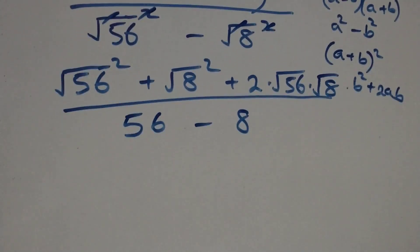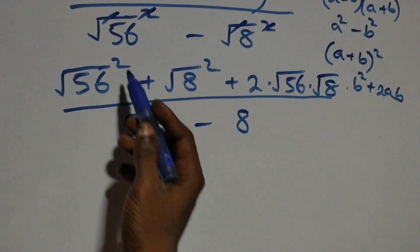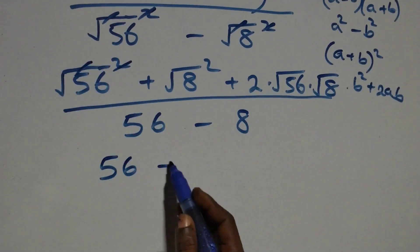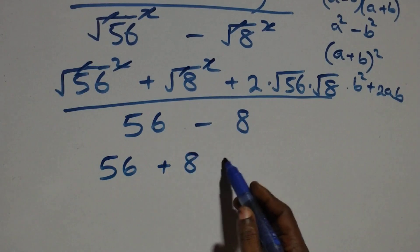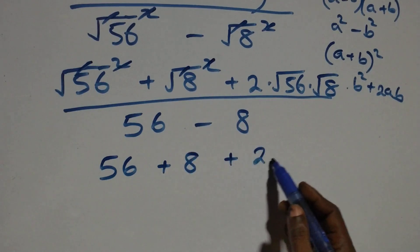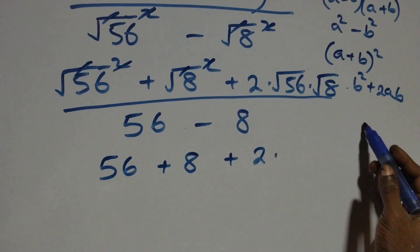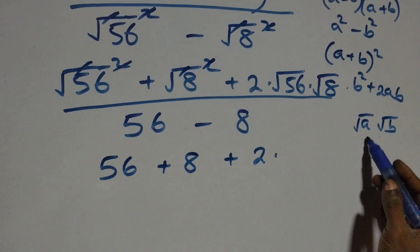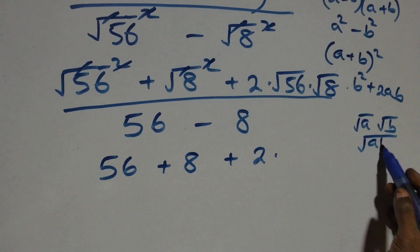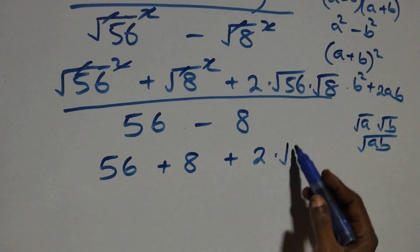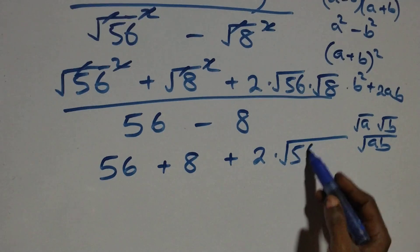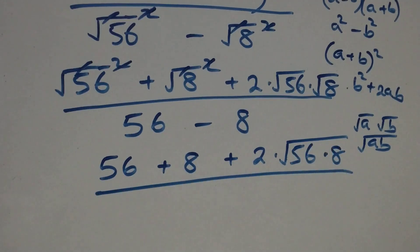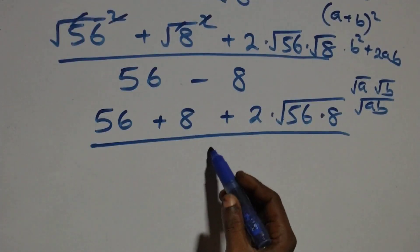For the numerator, the expansion of a plus b all squared equals a squared plus b squared plus two a b. So we have root fifty-six squared plus root eight squared plus two times root fifty-six times root eight. Squaring the radicals gives fifty-six plus eight, which equals sixty-four. For the cross term, we can write root fifty-six times root eight as root of fifty-six times eight. Fifty-six equals seven times eight, so we have root of seven times eight times eight, over forty-eight.